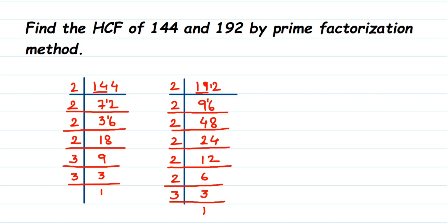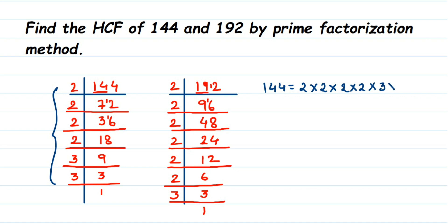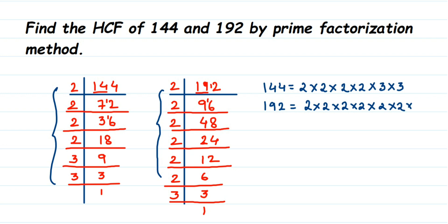Once we reach 1, we stop and write down all the prime factors. So 144 = 2 × 2 × 2 × 2 × 3 × 3 (four 2s and two 3s). And 192 = 2 × 2 × 2 × 2 × 2 × 2 × 3 (six 2s and one 3).